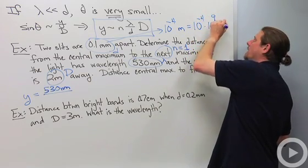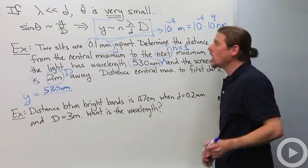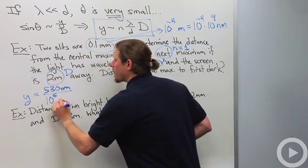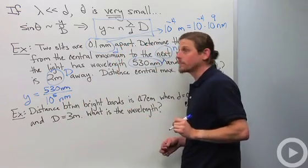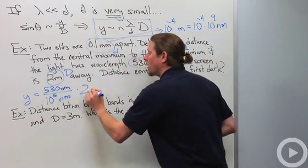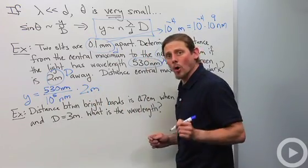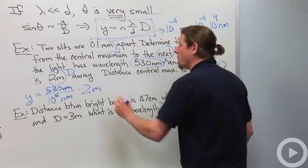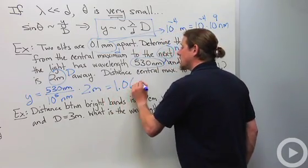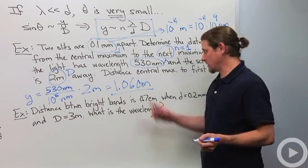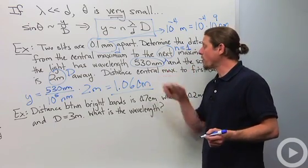nanometers. So it's 10^(9-4) is 5, so 10^5 nanometers. That's λ over d, and then we got times 2 meters. And if you go through this analysis, what you'll find is that it's 1.06 centimeters to the next maximum from the central maximum.